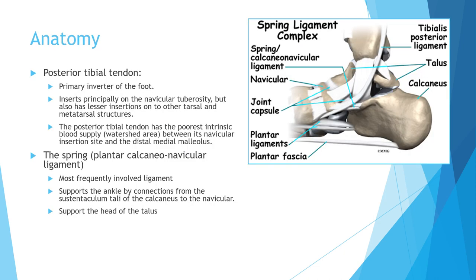We'll start with anatomy. There are two main structures involved in the pathology of the posterior tibial tendon: the posterior tibial tendon itself and the spring ligament. The posterior tibial tendon inserts into the navicular and has extensions into other tarsal and metatarsal bones. Its main insertion into the navicular bone inverts the foot — it is the primary inverter of the foot. The posterior tibial tendon has the poorest blood supply, with the watershed area between the distal medial malleolus and its insertion into the navicular.